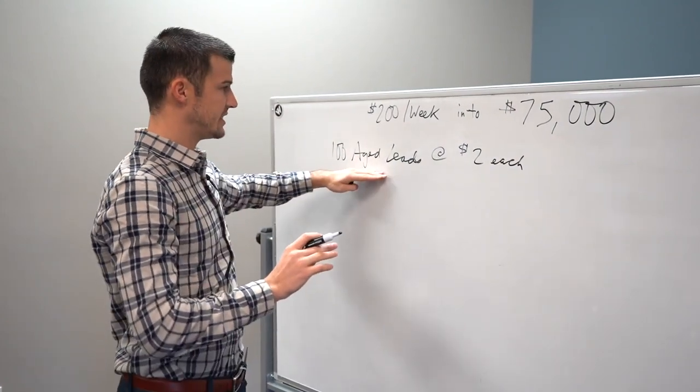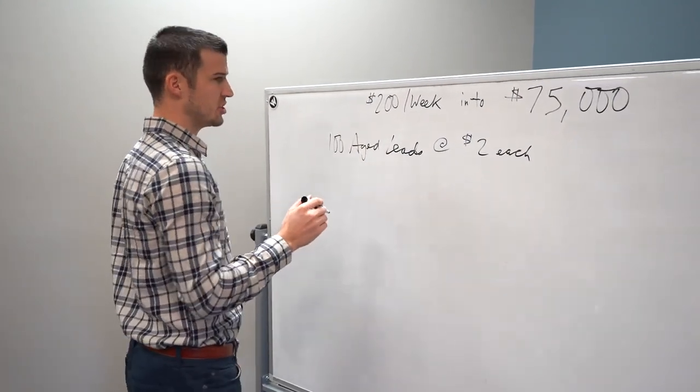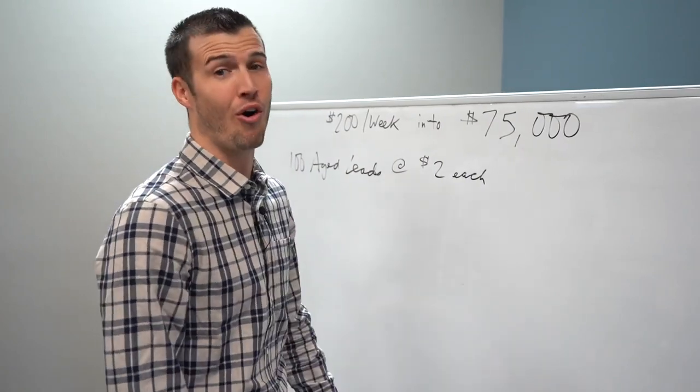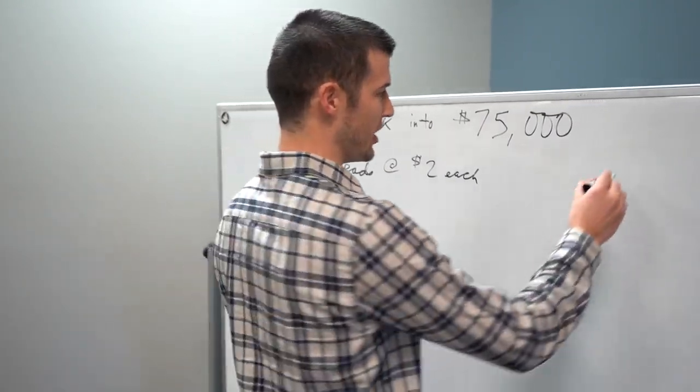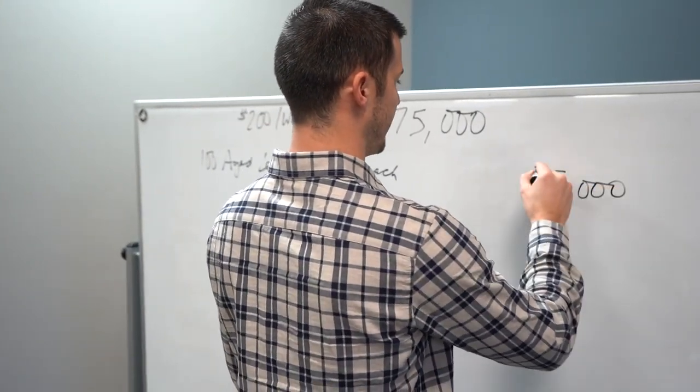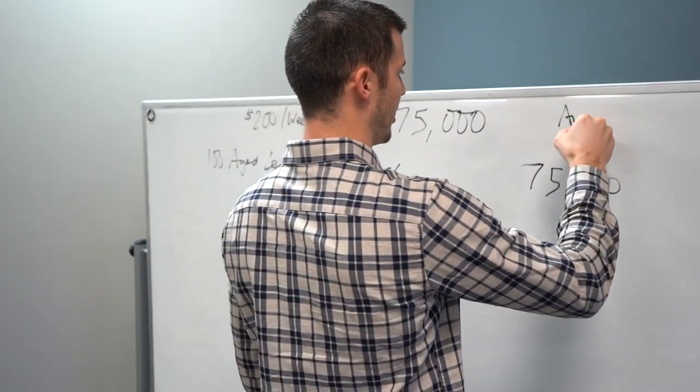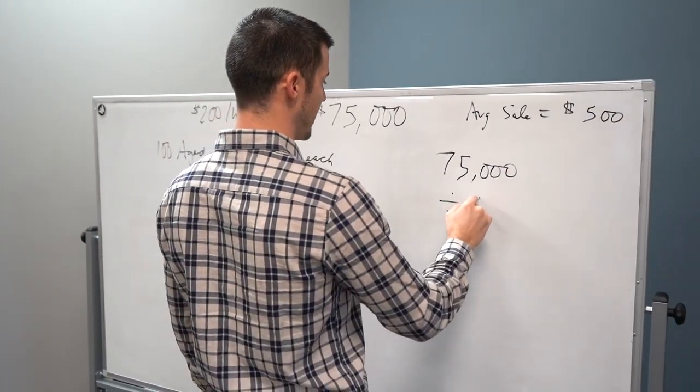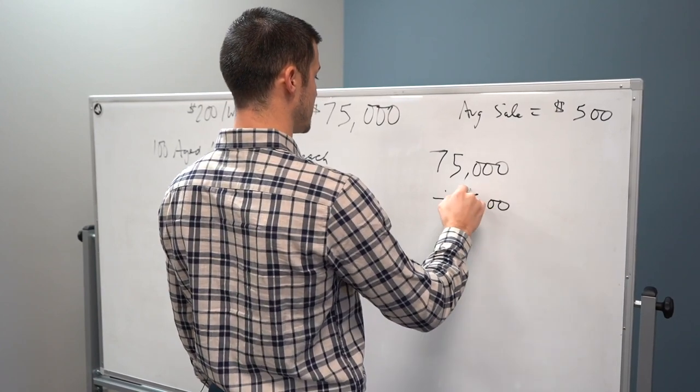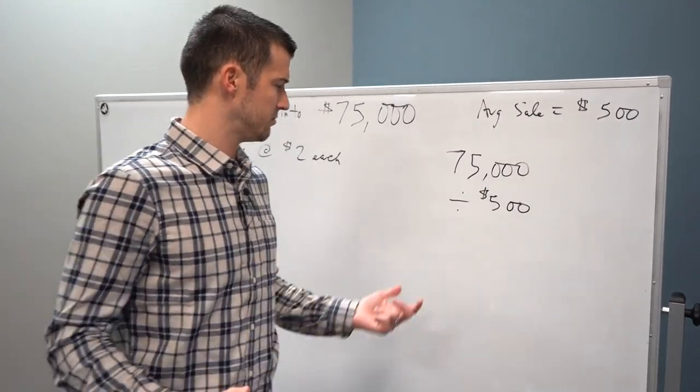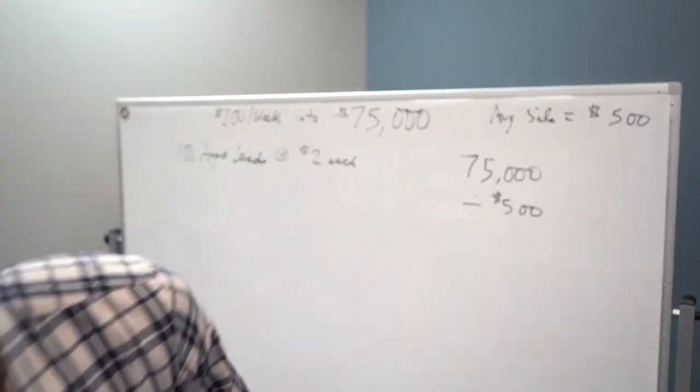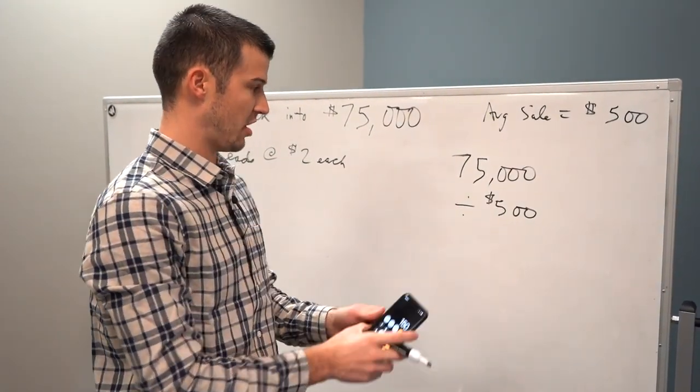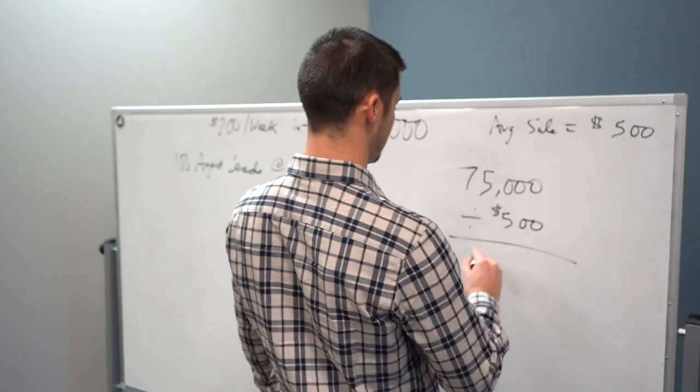So 100 leads, two bucks each, that's $200 a week. For 75K, let's just say that your average commission, I'm going to go small, I'm going to go baby numbers just for you. You're like, Cody, you aren't conservative enough. Let's just say that your average sell equals $500. So if you take 75K divided by $500, I think we end up with... 150 sales.